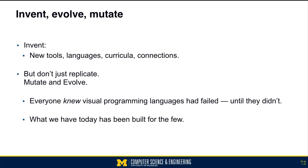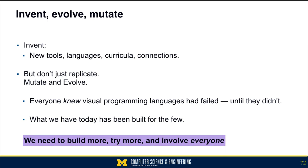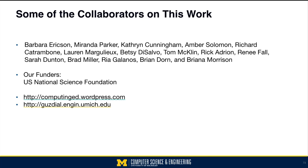I suggest that we need to invent, evolve, and mutate. We need to invent new tools, new languages, new curricula, new connections to other disciplines — but we don't want to just replicate what we have. We want to mutate and evolve. Everyone in software engineering knew that visual programming languages had failed — until Scratch came along, and it wasn't failing anymore. It served a purpose. Visual programming languages have now reached millions of kids. What we have today in computer science education has been built for a very few. CS for all means we need to expand the kinds of tools, languages, curriculum, and connections we have. We need to invent new kinds of things, build more, try more, and involve everybody.